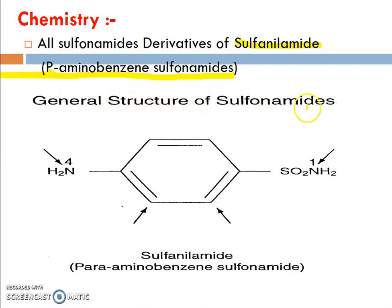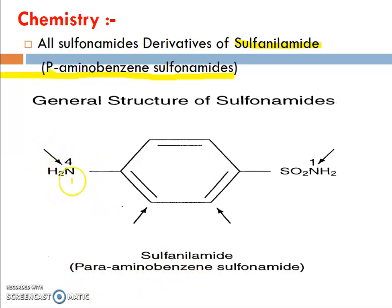The general structure of sulfonamides contains the amine group NH2 and a sulfonamide group SO2NH2.